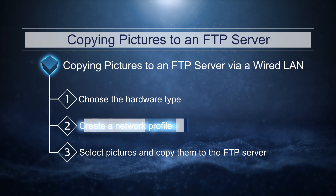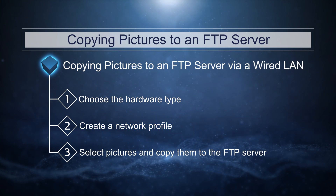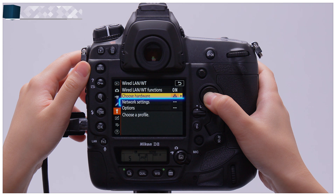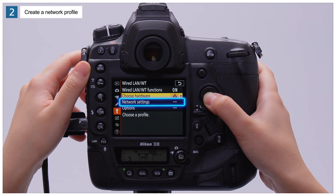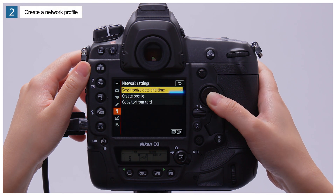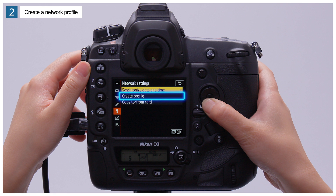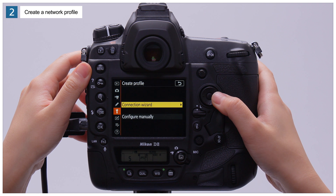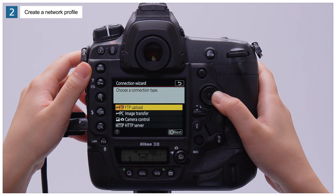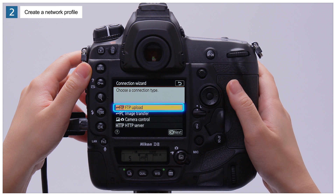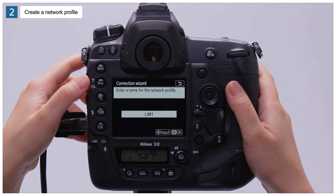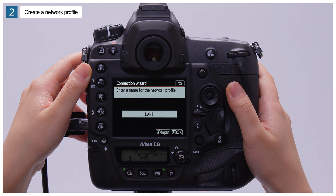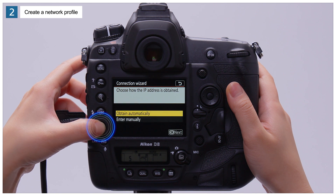Next, configure the camera for connection using the connection wizard. Select Network Settings and choose Create Profile. Select Connection Wizard to start the connection wizard. Select FTP Upload. You can now name the new network profile — here we'll just press OK to use the default name.